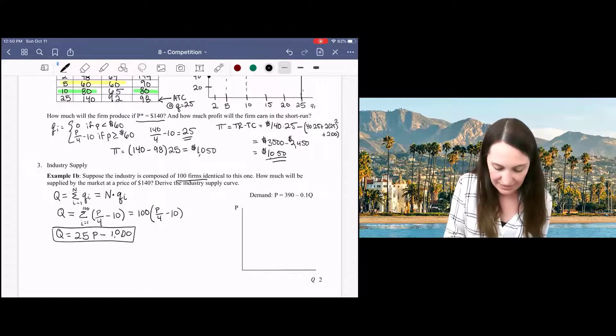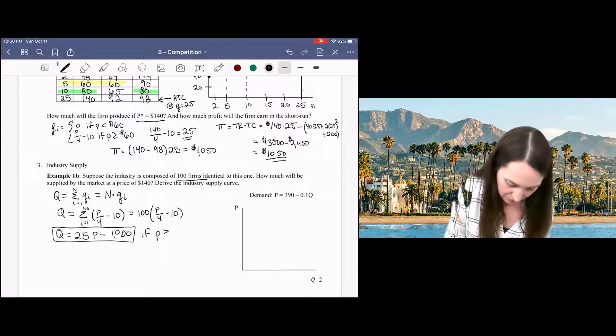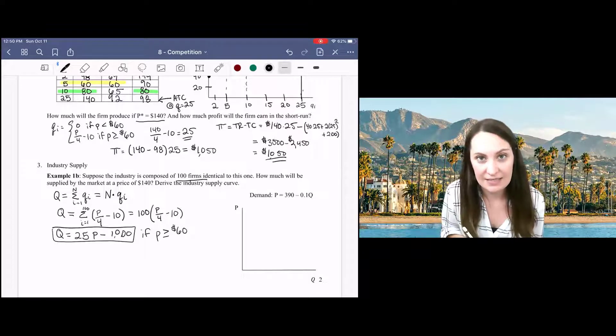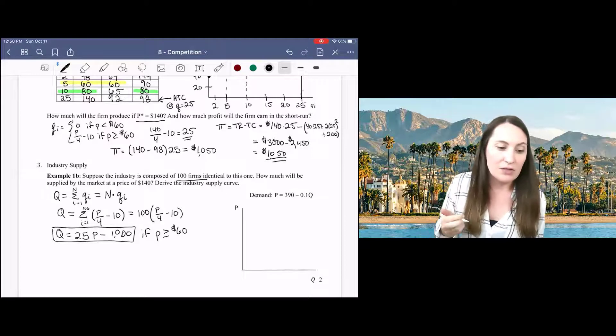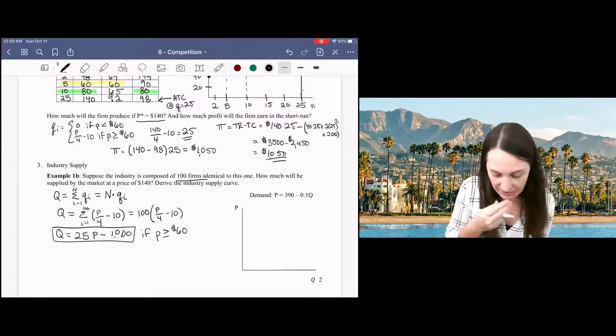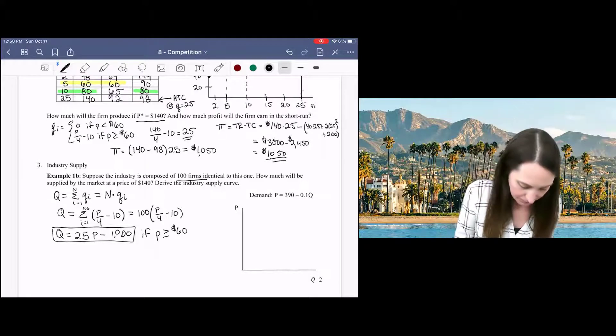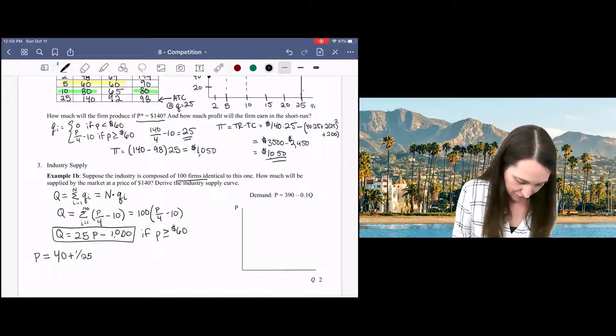Now, of course, that's if the price is greater than or equal to 60, because if the price is less than 60, then the market will supply zero. So we can rearrange this to inverse supply to help us with our graphing. We would get P equals 40 plus 1 over 25 times Q.